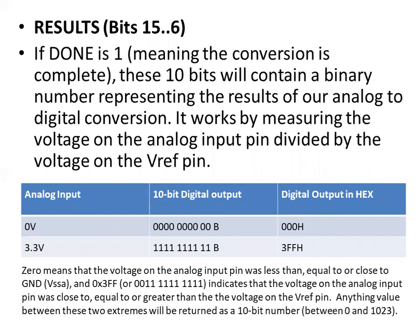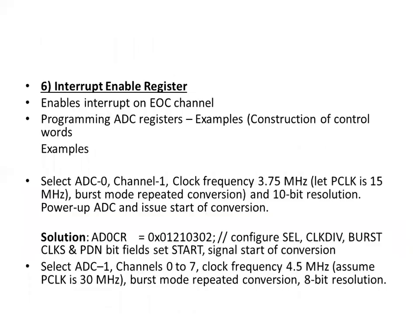The results bits: if done is 1, meaning conversion is complete, these 10 bits contain a binary number representing the analog-to-digital conversion result. It works by measuring the voltage on the analog input pin divided by the voltage on the VREF pins. The interrupt enable register enables interrupts on EOC for each channel. Programming the ADC control register requires configuring sub-control ports and selecting the ADC channel.